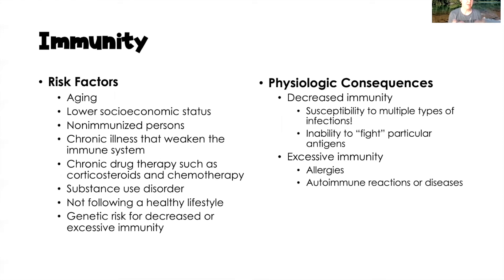Risk factors for decreased immunity include aging — our immunity response declines as we age — lower socioeconomic status, not being immunized, and chronic illness. Certain drug therapies also weaken the immune system, particularly corticosteroids: clients on long-term corticosteroids have a suppressed immune system. Chemotherapy, substance abuse disorders, not living a healthy lifestyle (poor diet, lack of exercise), and genetic factors can all contribute to decreased or excessive immunity.